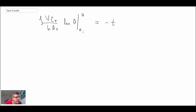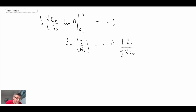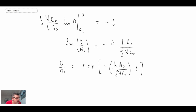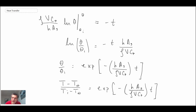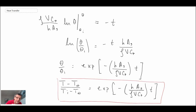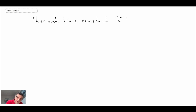Theta-i equals Ti minus T-infinity. Integrating d-theta over theta gives the natural logarithm, and the right-hand side is just minus t times the coefficient. Introducing the integration limits and taking the exponential of both sides to eliminate the natural logarithm, then reintroducing the substitution for theta, we obtain our solution: the temperature as a function of time under the lump capacitance technique. We then introduce the thermal time constant tau, which is essentially 1 over the coefficient in the exponent, and rewrite the equation in terms of tau.